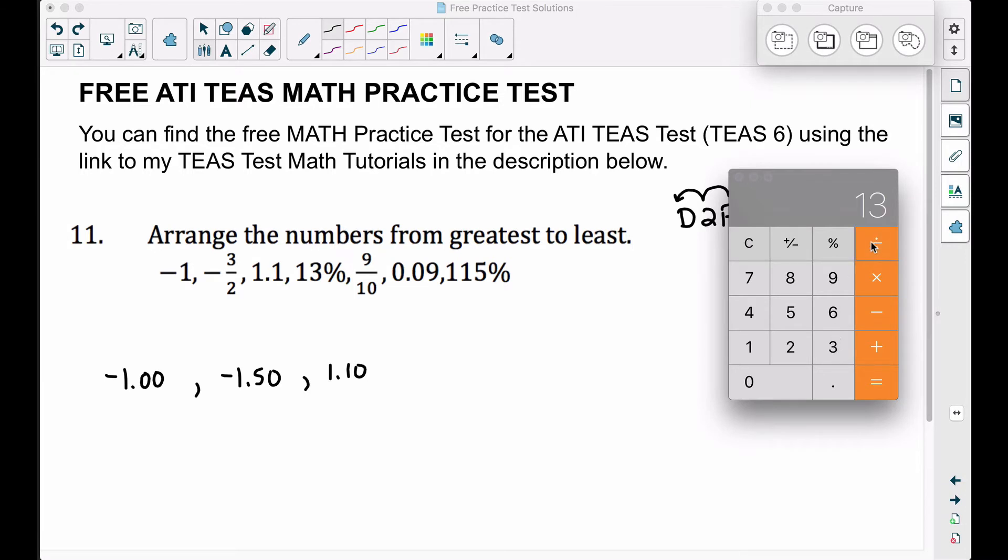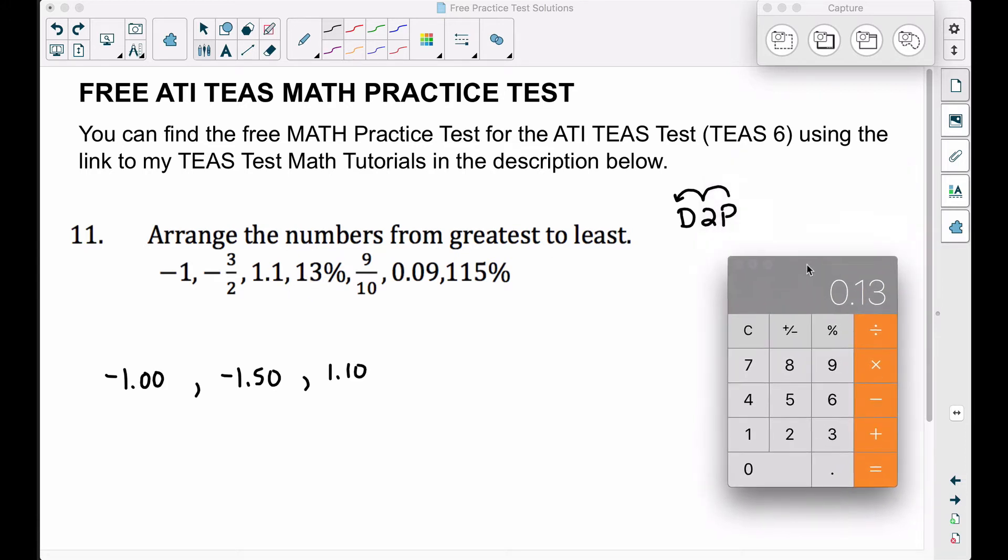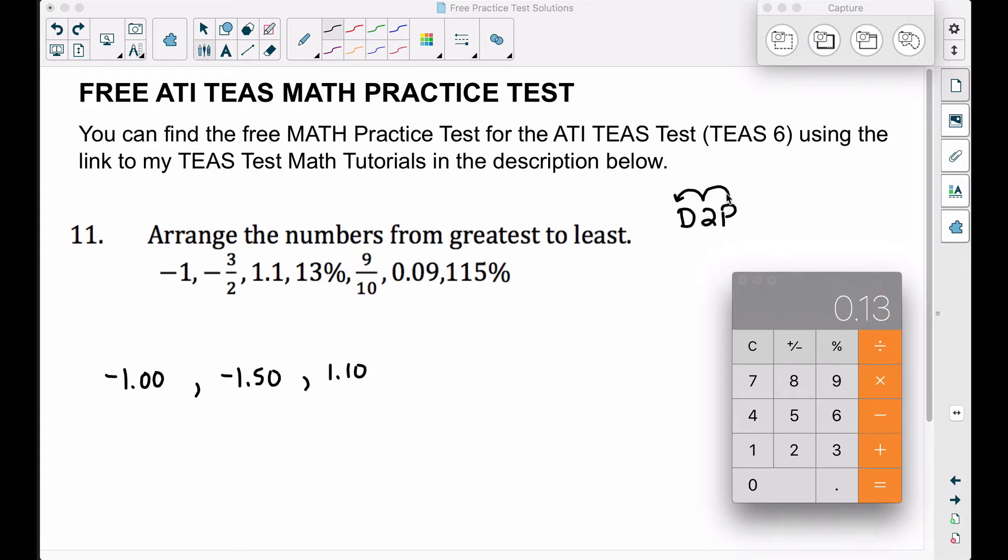Another way to think about this is to take your percent and divide it by 100. Taking that 13 percent, if we divide it by 100, we're going to end up getting 0.13, which is 13 cents. Notice all we really did was move the decimal, which is at the far right, two places to the left.